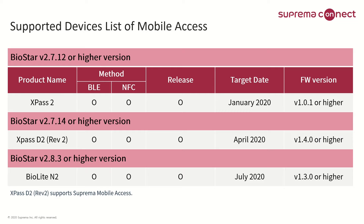Currently, only ExPass 2, ExPass D2 Revision 2, and BioLite N2 support Suprema Mobile Access on these three devices. Regarding the compatible firmware list and the device list for Suprema Mobile Access, please refer to the table on the screen. Each supported device has a different version of BioStar 2, so please refer to the on-screen table to install and use the appropriate version of BioStar 2.